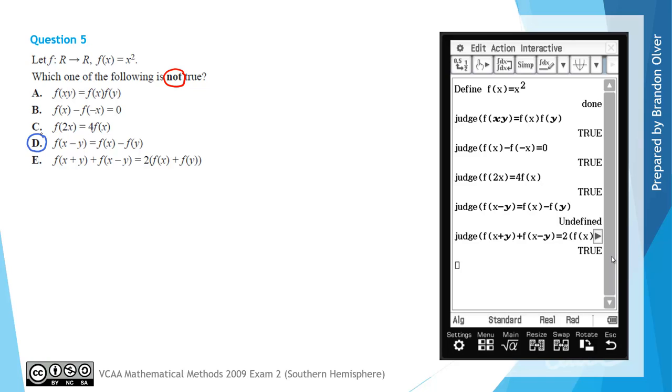Now just before we finish off, I'll show by hand why that's not correct. If we start with the left-hand side of that option, we'd have f of x subtract y, which is really just equal to x subtract y squared. We're just going to put x take y into f of x, in other words.